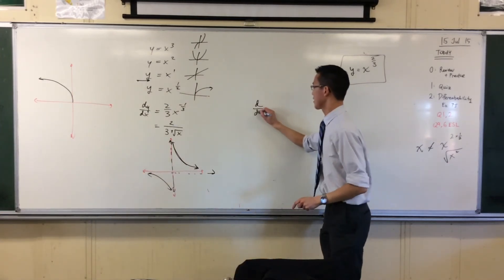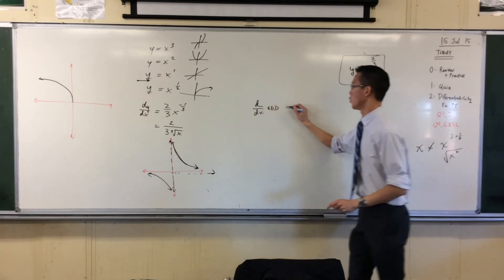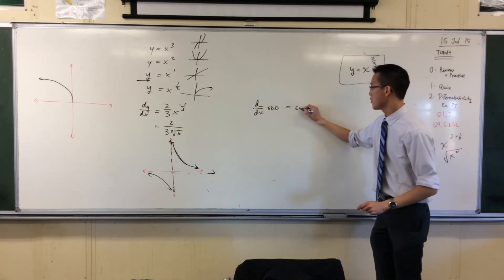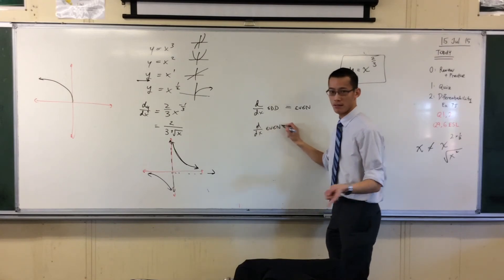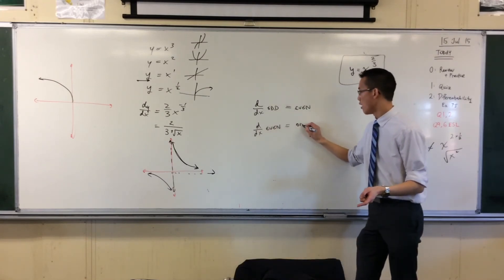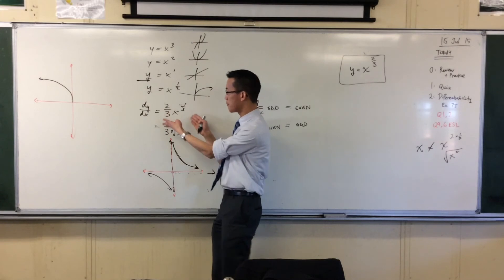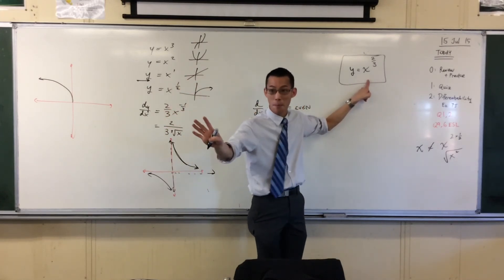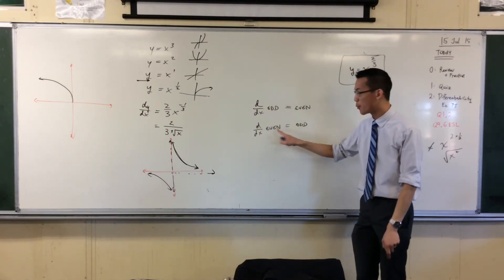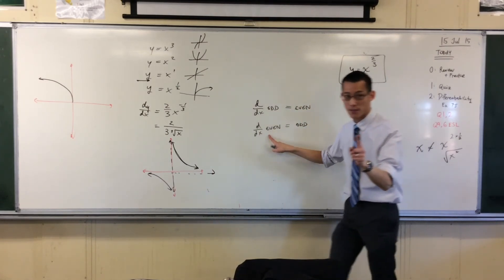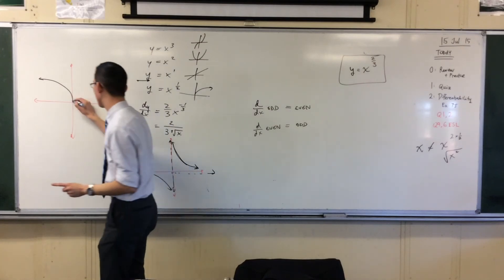When you differentiate an odd function, what do you get? An even function. And if you differentiate an even function, you get an odd function. So we differentiated something, which we didn't really, sorry, something that we didn't really know about, but what we got at the end was odd. So therefore, what we must have started with was even. So once I got this shape, I've got the other shape.